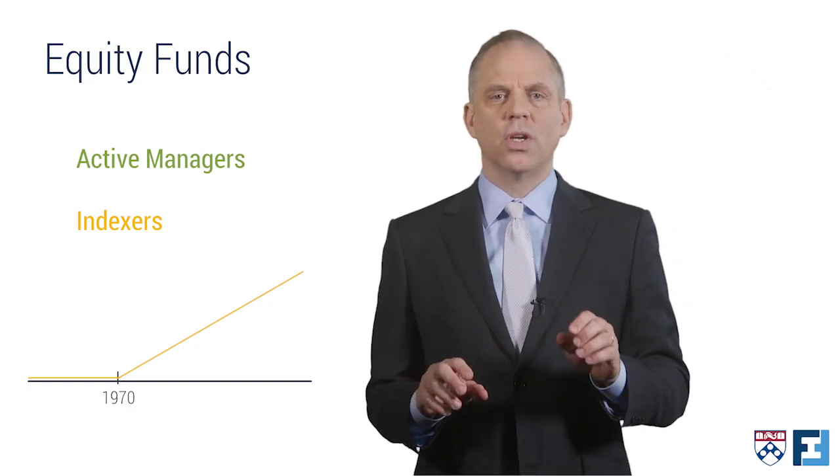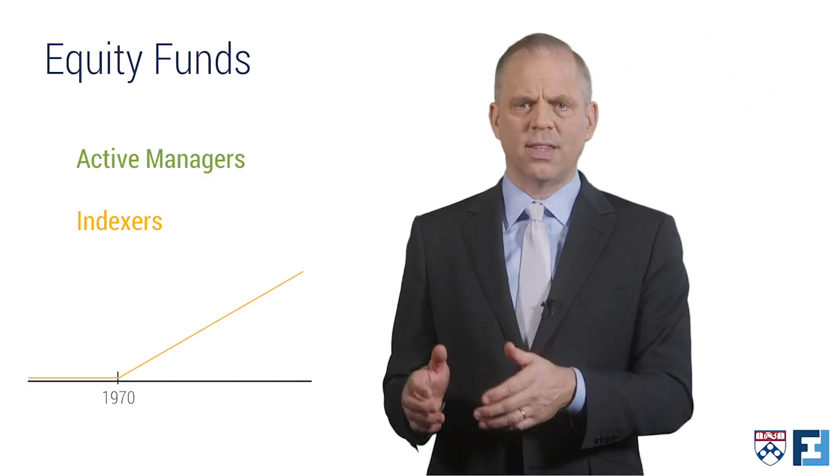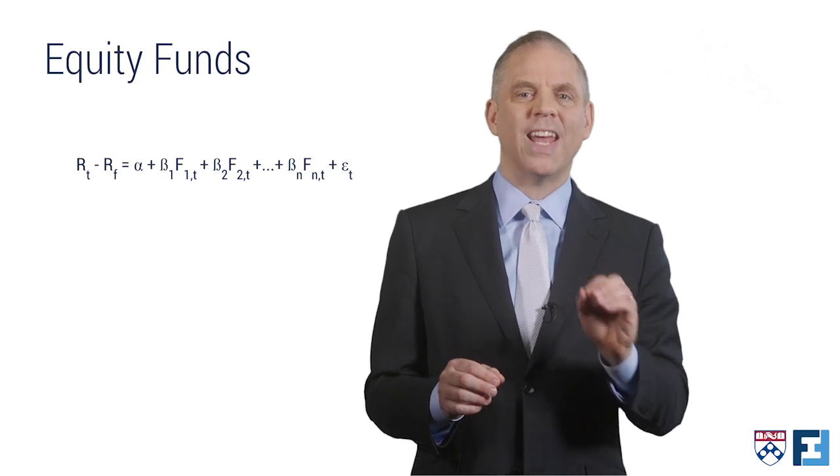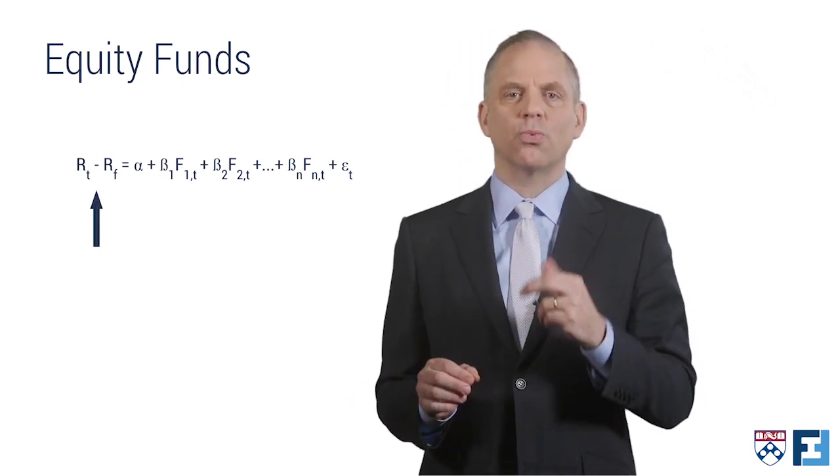In the first course, you saw alpha and beta, which come out of an equation like this. A fund's return, or specifically its return in excess of the risk-free rate, can be broken down into three components.